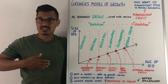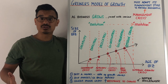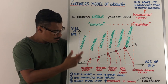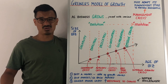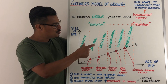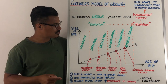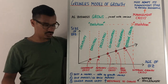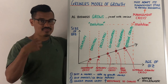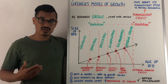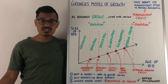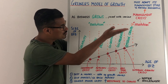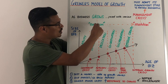The first evolutionary phase is creativity — the initial stage where founders encourage innovation, informal communications, and creative thinking. Eventually, this leads to a leadership crisis because the founders feel they've lost control. The solution is to move to the next phase: direction, where an organizational structure is put in place. This works for a time, but then leads to an autonomy crisis, as experienced managers want more say in decisions.